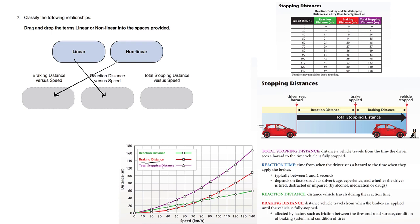Finally, total stopping distance versus speed. Total stopping distance is purple, and we have this purple graph here that's curved upwards, so we're going to call this nonlinear.